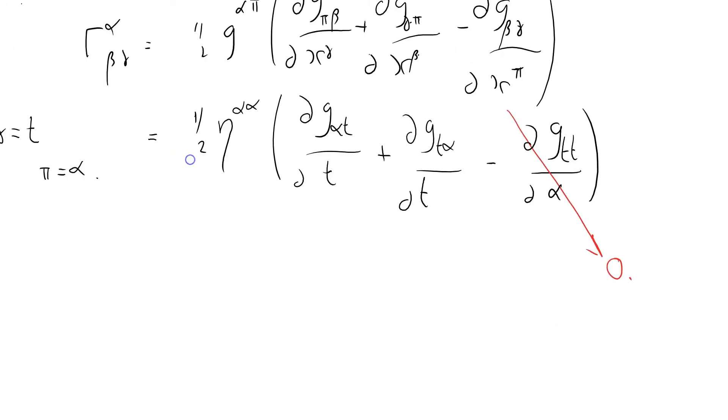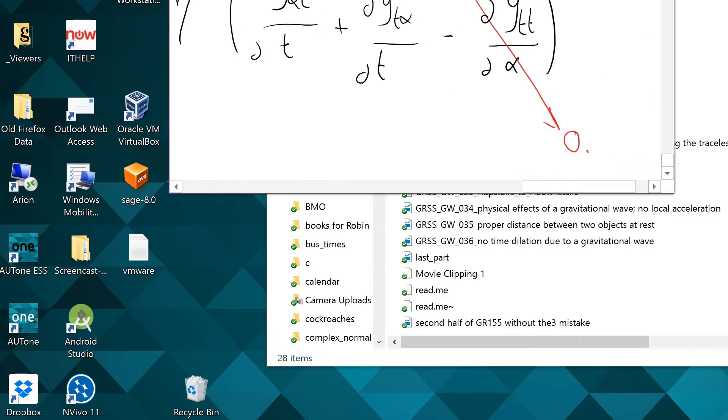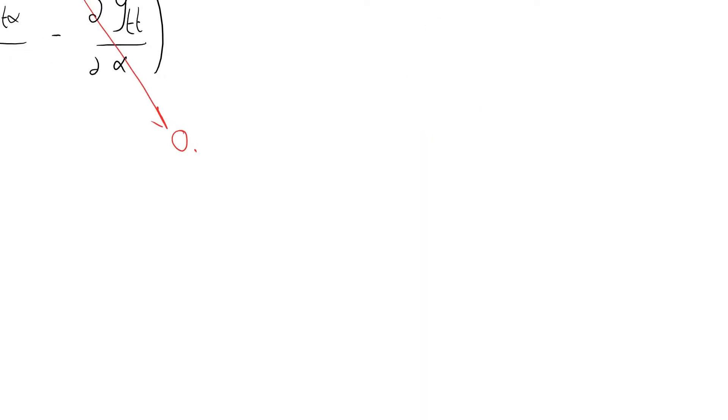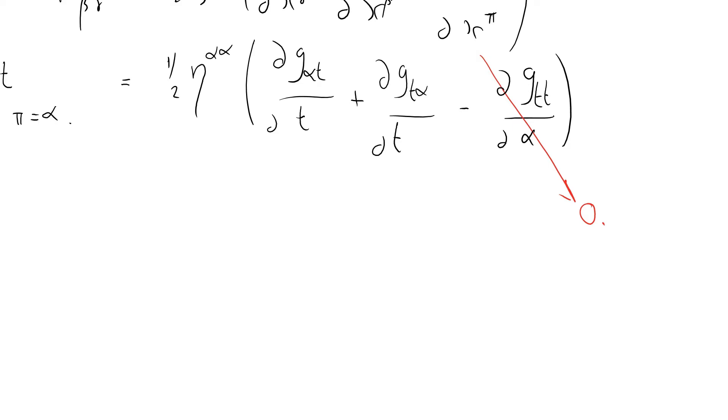So what have I got left now? We've got two identical things here because the metric tensor is symmetric, and we now have η^{αα} times ∂g_{αt}/∂t equals what?